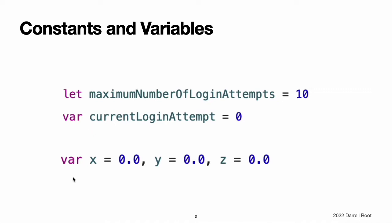You can declare multiple constants or multiple variables on a single line separated by commas. If a stored value in your code will not change, always declare it as a constant with the let keyword. Use variables only for storing values that need to be able to change.